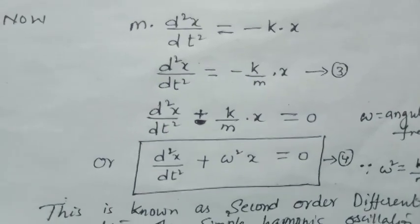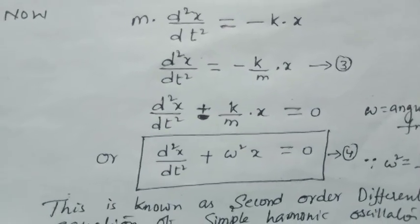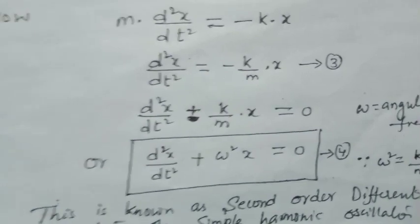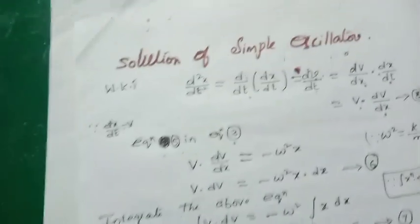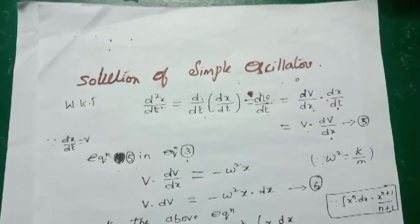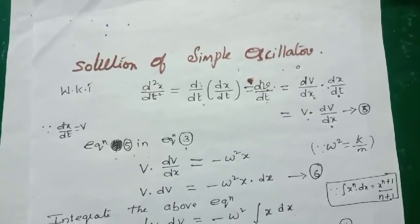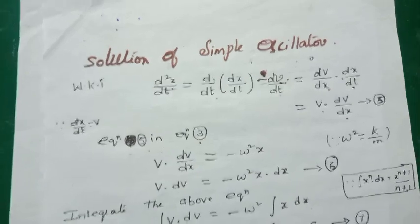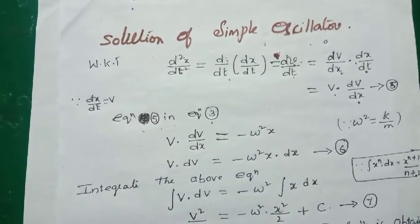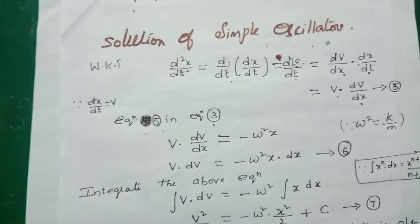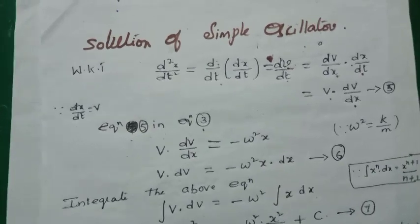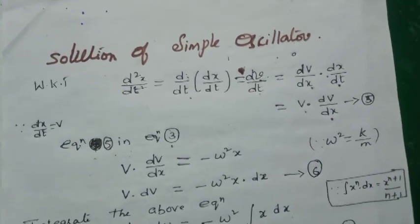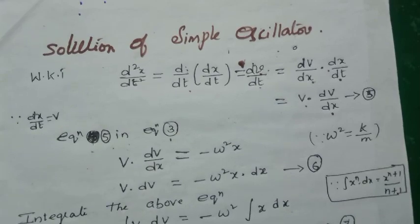This is the second-order differential equation, and from it we will derive the solution of a simple harmonic oscillator, since the unknown is x. In this derivation, we write d²x/dt² as d/dt(dx/dt). Since dx/dt = v, we get dv/dt, which is rewritten using the chain rule as v·(dv/dx). This is equation (5).